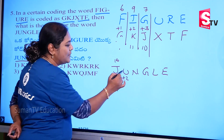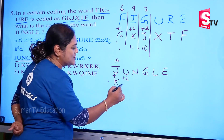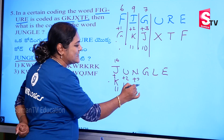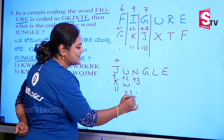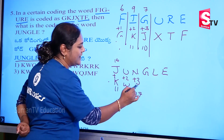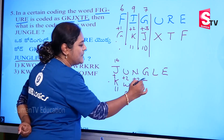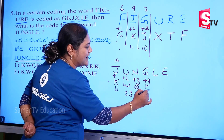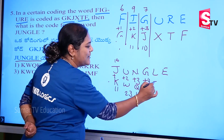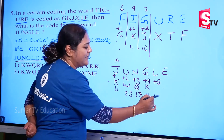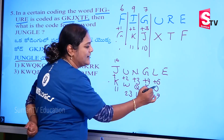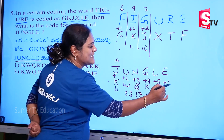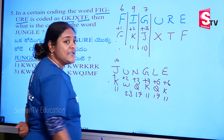Next: N, plus 2. 21 plus 2 = 23. And W, plus 3. 14 plus 3 = 17. Q, plus 4. 7 plus 4 = 11. And K, then plus 5. 12 plus 5 = 17. And K, then plus 5, plus 6 = 11.